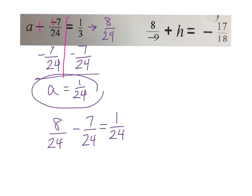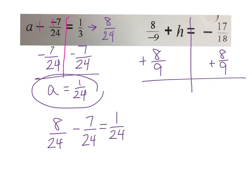For the second problem, again keep it organized — cut it down the middle. I'm going to isolate my H. Right now it's adding a negative, so I want to subtract a negative, or add a positive. Remember, minus a negative is the same thing as adding a positive. So I'm going to add 8 ninths to both sides. On the left I just get H because adding a positive 8 ninths and a negative 8 ninths cancel out.